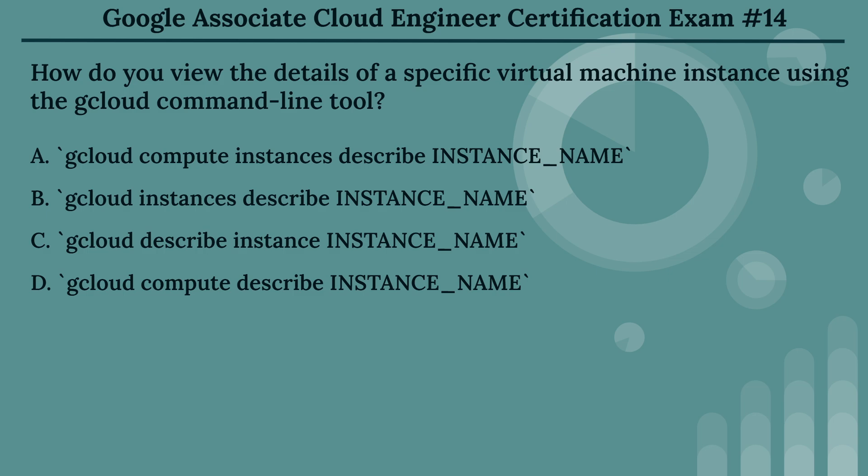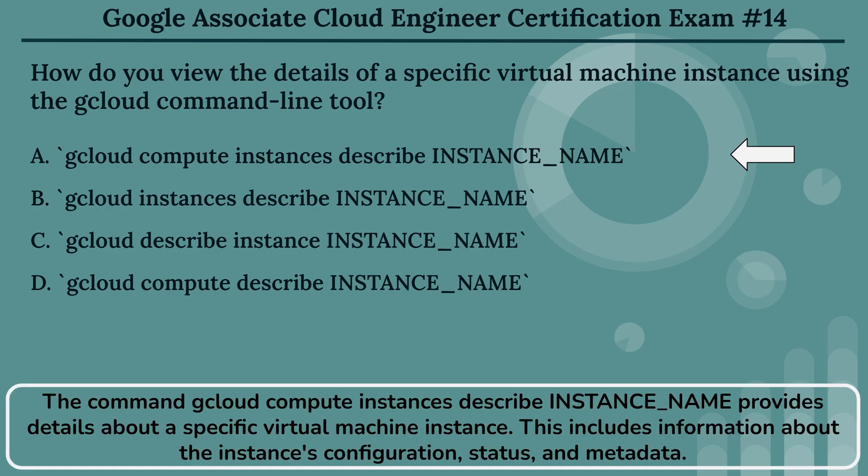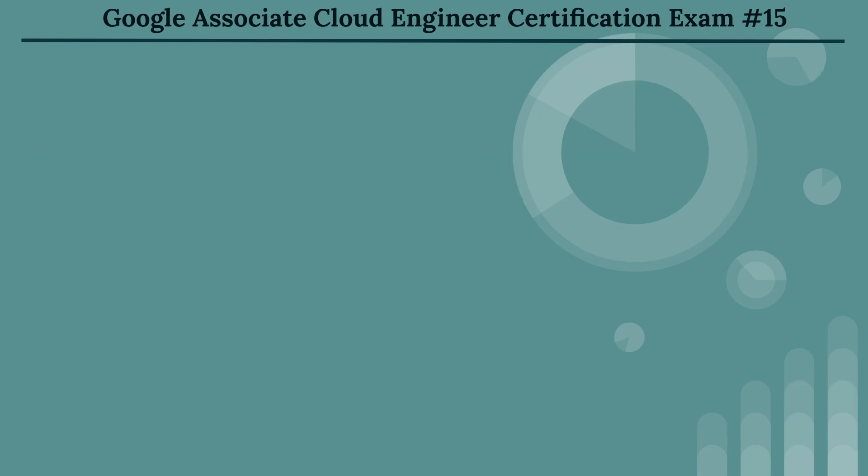The right answer is Option A: gcloud compute instances describe INSTANCE_NAME. The command gcloud compute instances describe INSTANCE_NAME provides details about a specific virtual machine instance. This includes information about the instance's configuration, status, and metadata.